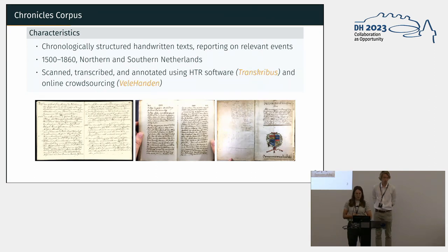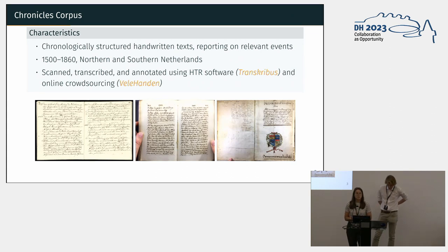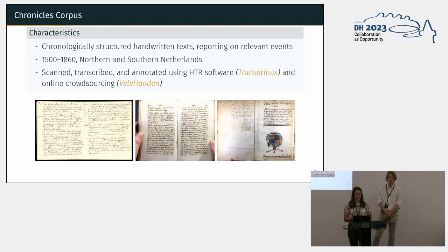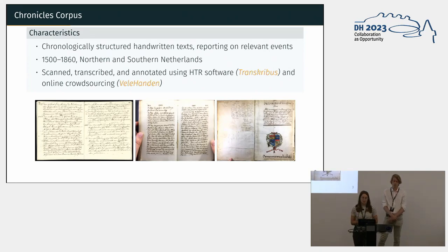The corpus was created in the context of the project called 'Chronicling Novelty: New Knowledge in the Netherlands,' which consists of about 300 and some chronicles from the period between 1500 and 1800, covering the region of the northern and southern Netherlands — nowadays the Netherlands and Belgium. These chronicles were scanned, transcribed, and annotated using HTR software Transkribus, with help from many volunteers. The volunteers also annotated dates in the chronicles, since chroniclers often write 'on this date, this and this happened,' which is an important annotation.